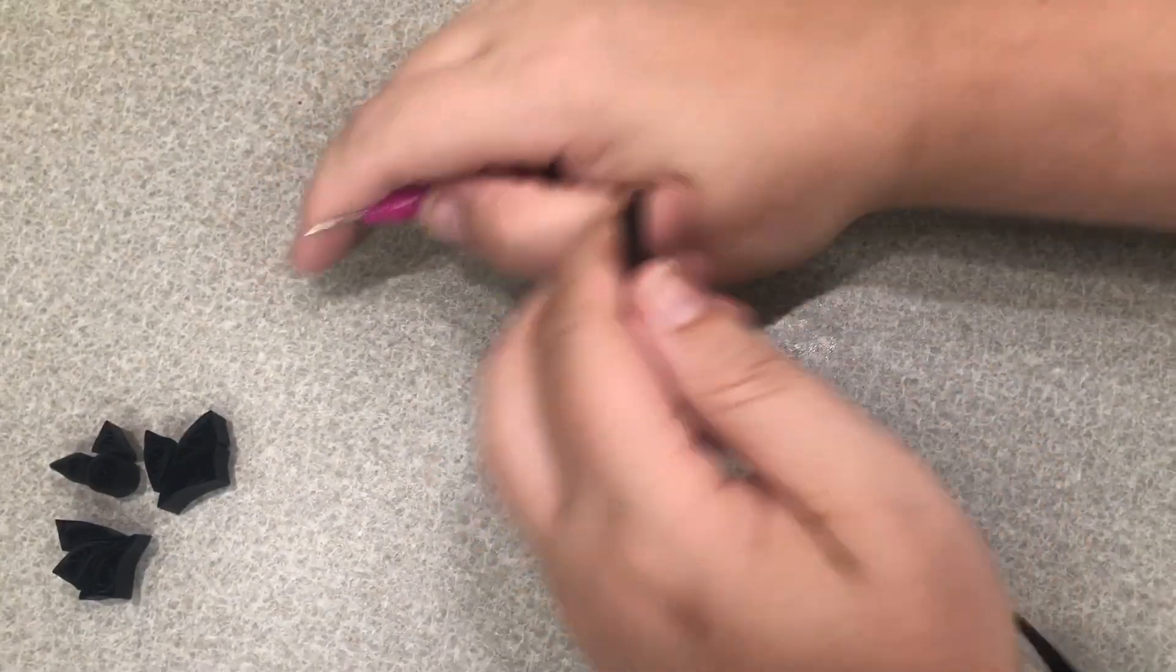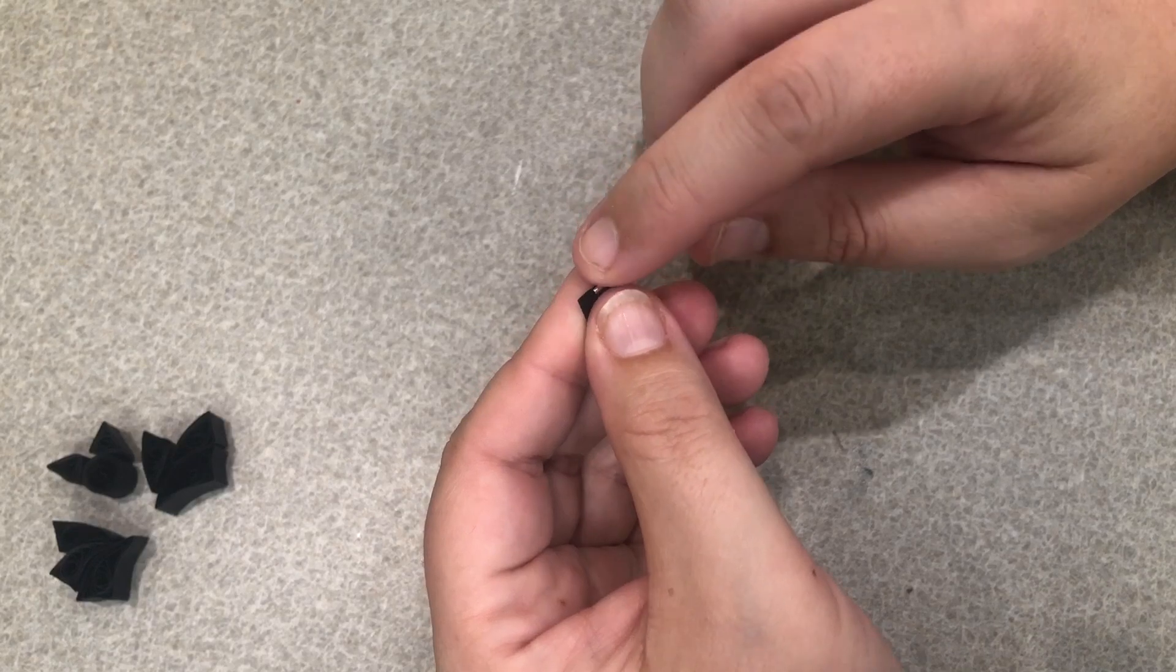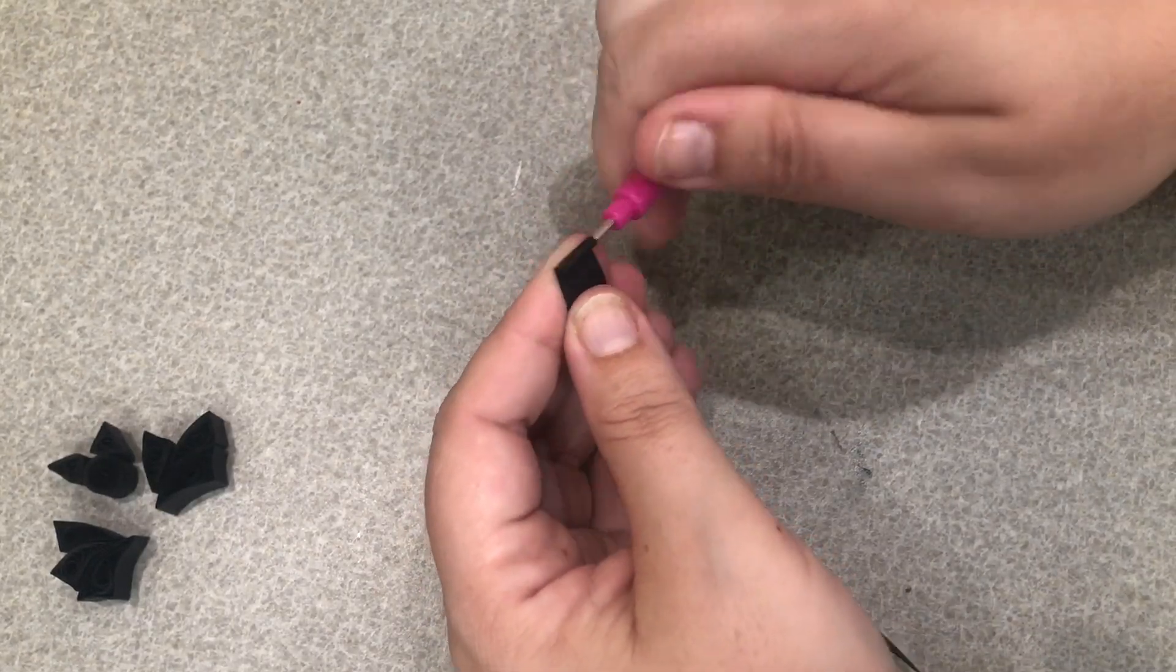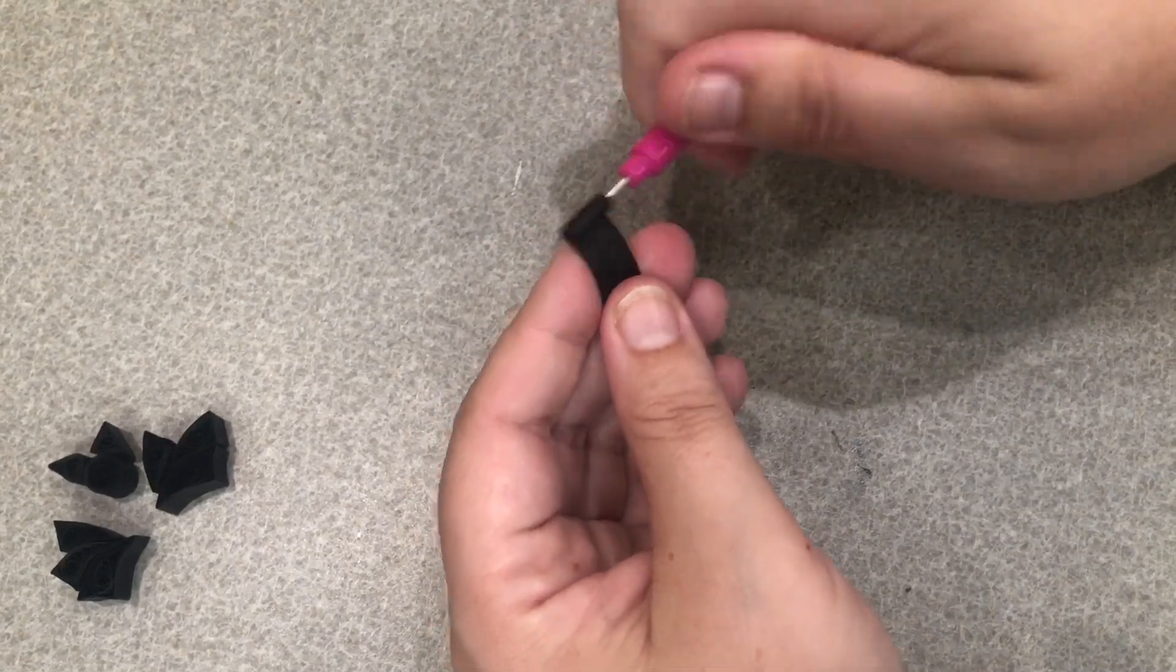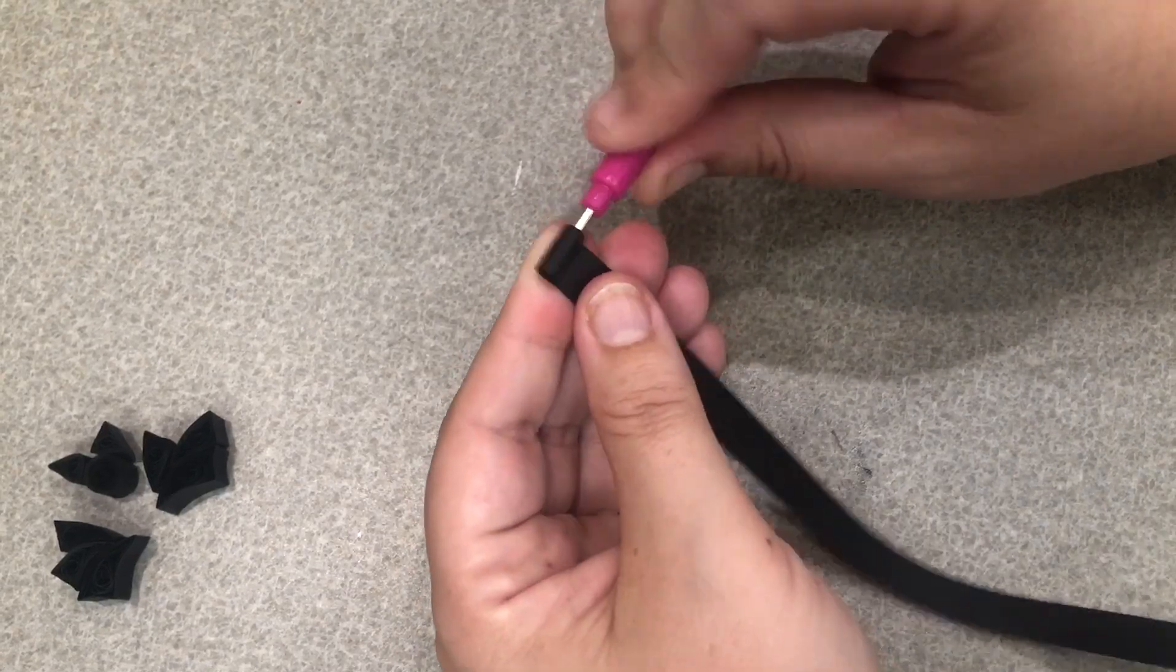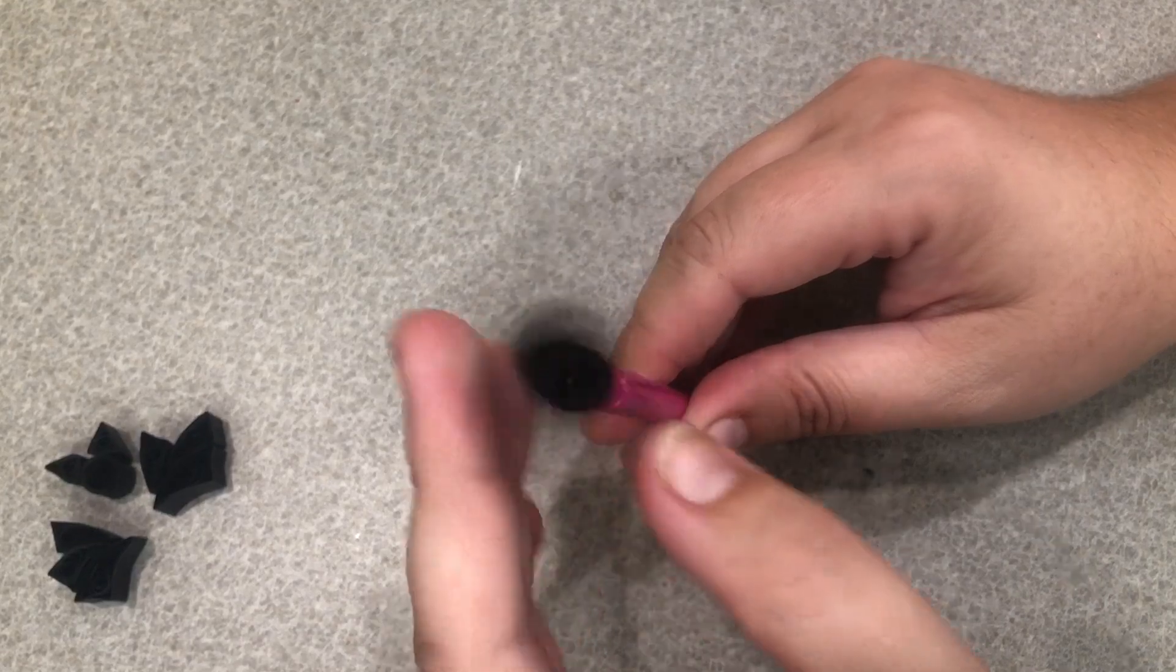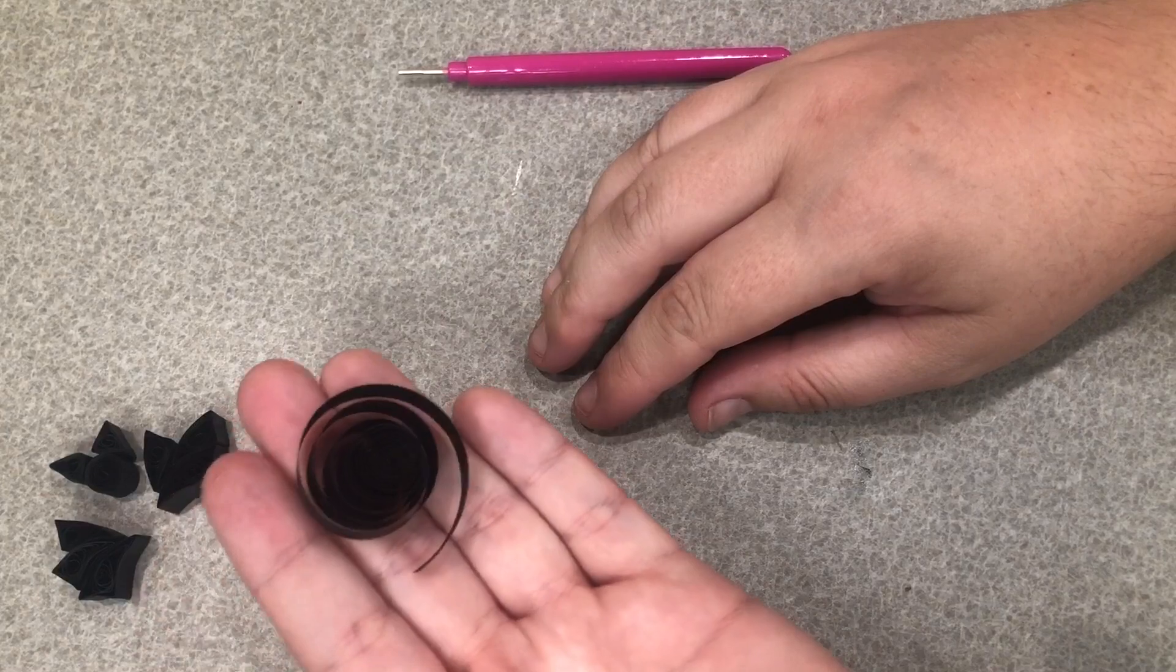Once we have those ears done, the very last thing we need to make is a big fat circle for the bat's body. So we're going to take our last strip of black and roll it up the full strip into one big fat circle. Once it's rolled up, we'll let it go. This is going to be a very large circle.